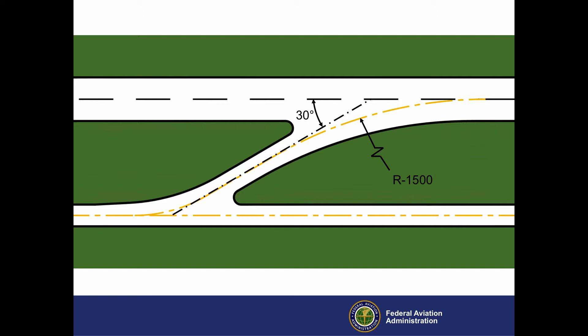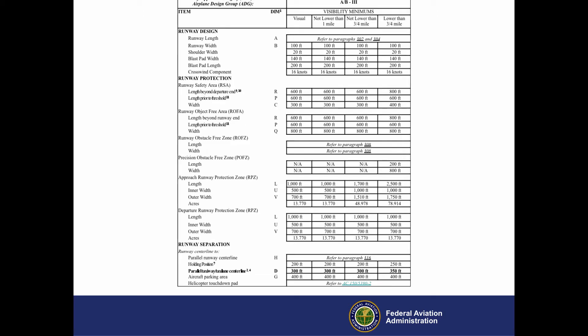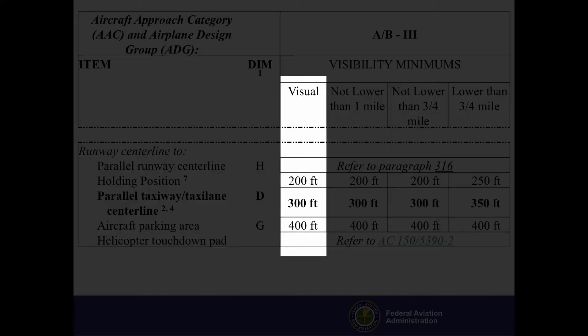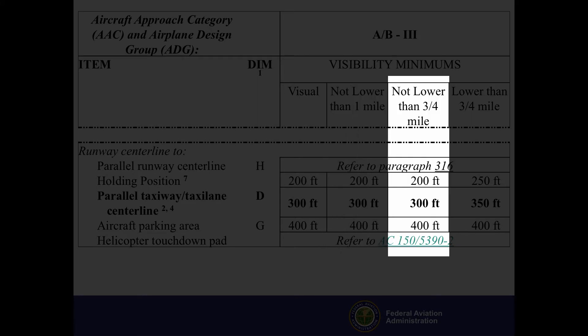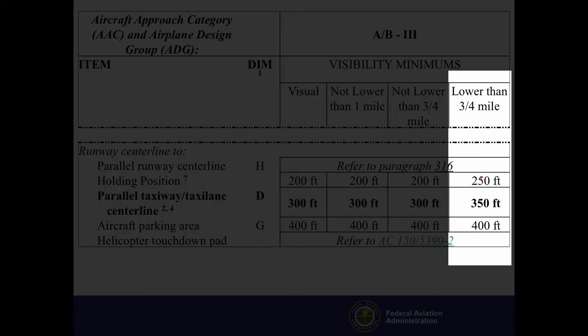If the exit does not include a reverse turn to the parallel taxiway, determine the runway centerline to taxiway centerline separation based on airspace requirements for the aircraft approach category, airplane design group or ADG, and visibility minimums as detailed in the Airport Design AC. For example, for aircraft approach categories A and B, ADG-3, the minimum distance between the runway centerline and parallel taxiway centerline is 300 feet for visual approaches, approaches not lower than 1 mile, and approaches with visibility minimums not lower than 3/4 of a mile. The minimum distance for approaches with visibility minimums lower than 3/4 of a mile is 350 feet.